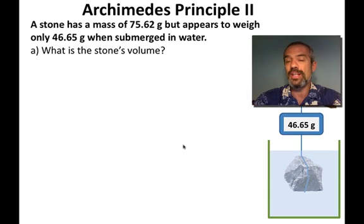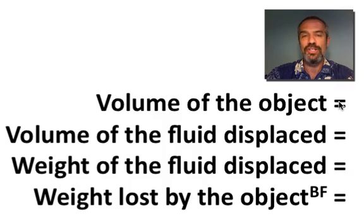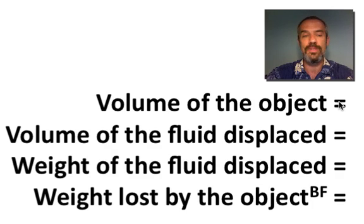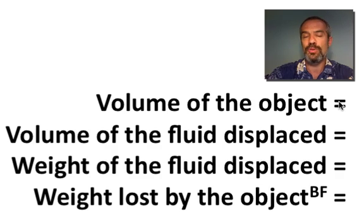It turns out it's actually quite simple, but you can easily lose your way on this, and that's why I'm going to encourage you to use this table. In teaching this over the years, I've found students who use this table invariably do much better in solving these problems. The table reads: volume of the object, volume of the fluid displaced, weight of fluid displaced, and weight lost by the object. The BF there is to remind you that we're talking about the buoyant force — this thing appears to have lost weight because there's a buoyant force pushing upward on it.